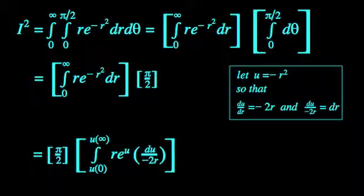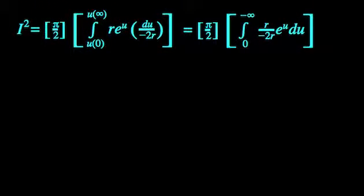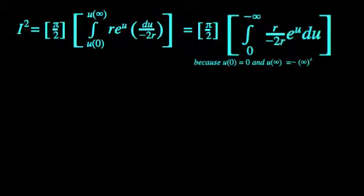As you can see, there is an r both in the numerator and the denominator. As long as r behaves and does not take on the value of 0 on the interval, then these two terms cancel out. And what we are left with is e to the u multiplied times negative 1 half.